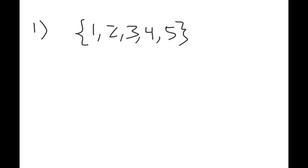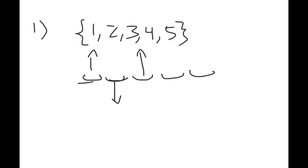If the permutation looks like this, then we want the first position to be greater than the second, the second greater than the third, the third greater than the fourth, and the fourth less than the fifth. We want to compute the probability that a permutation of the set is a W permutation.